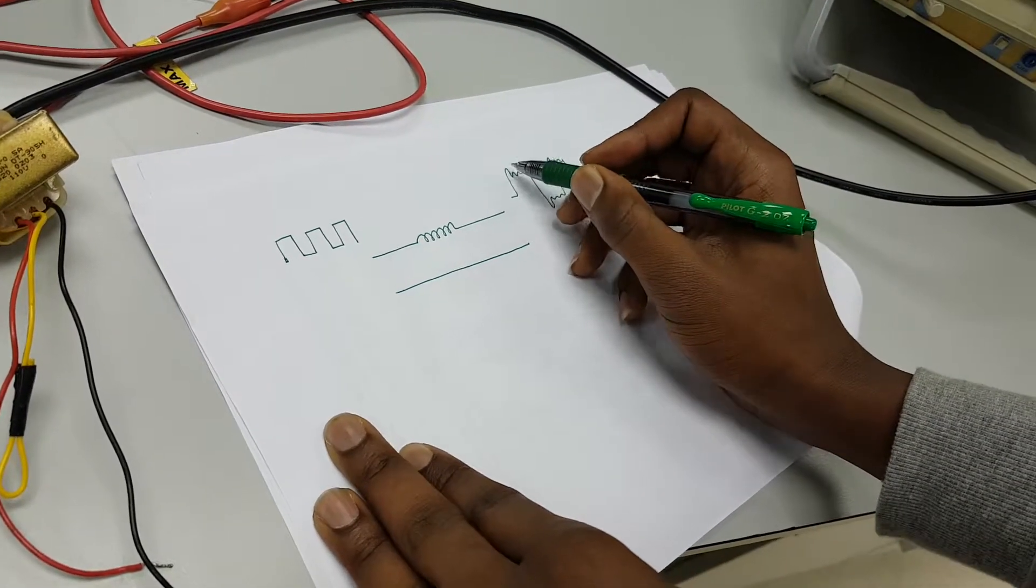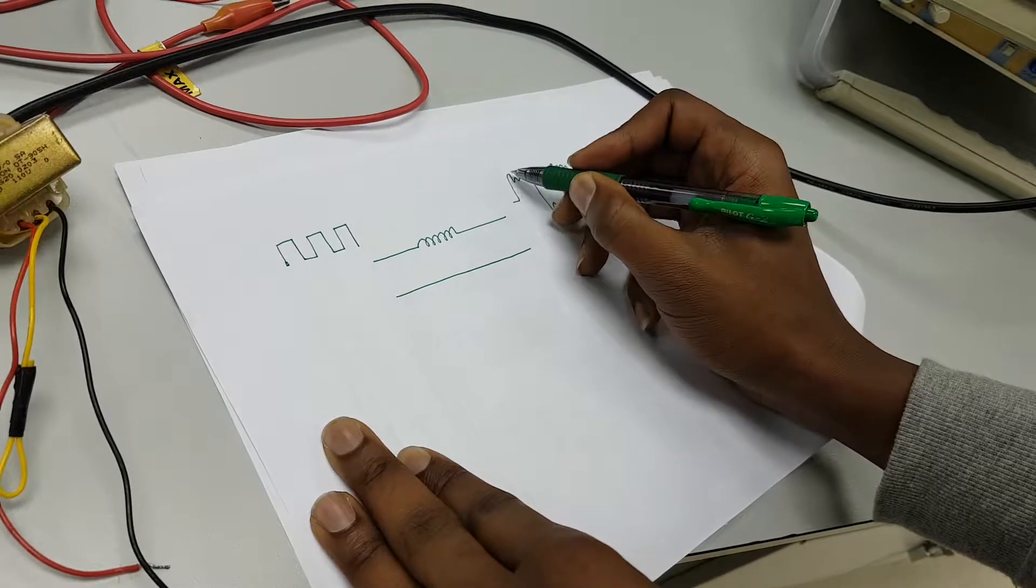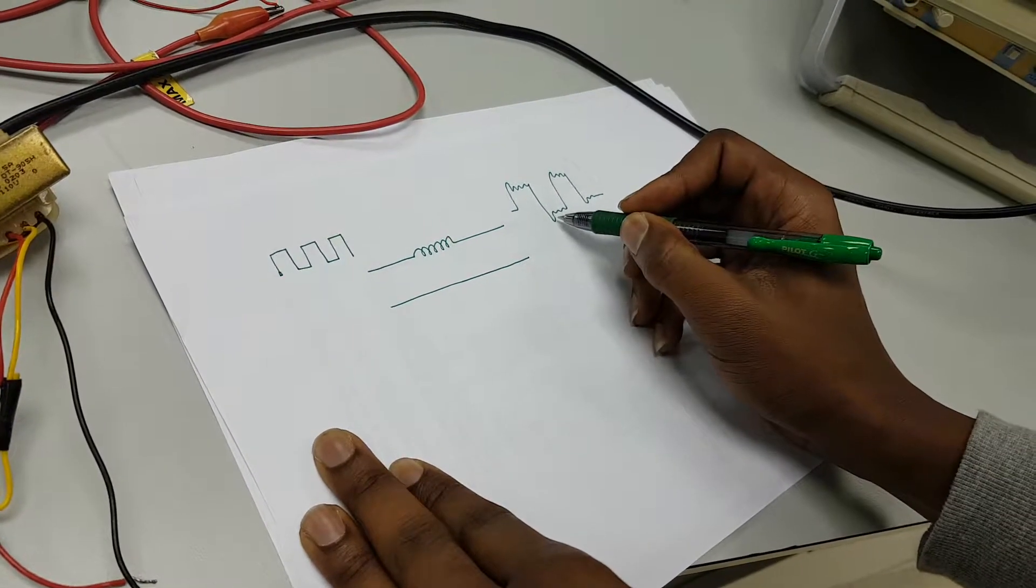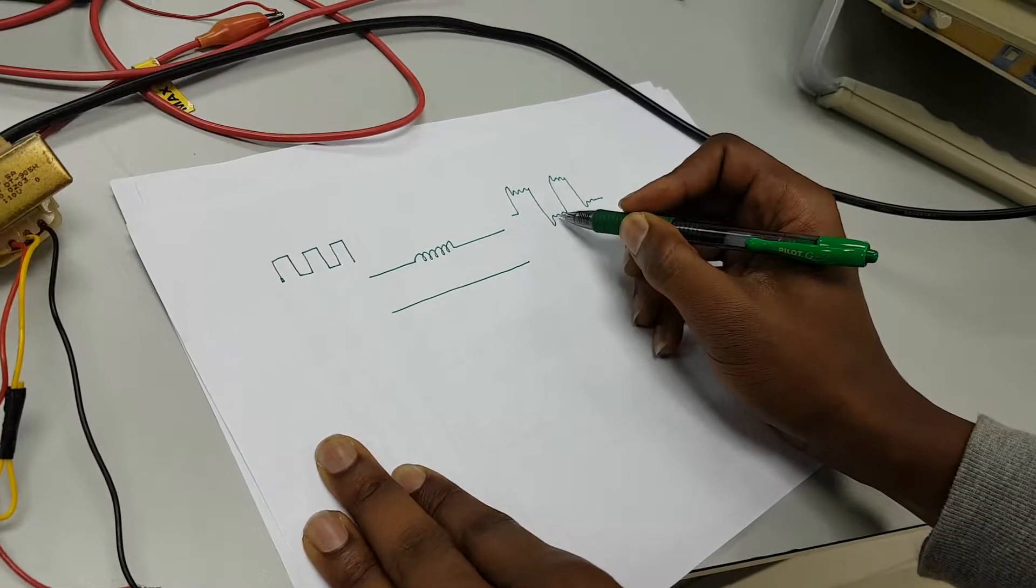At this point we can observe ringing—an overshoot followed by ringing, and also an undershoot at this other point followed by ringing.